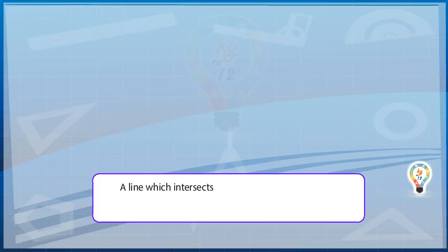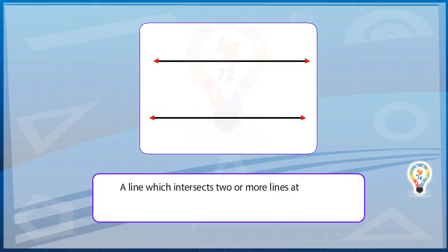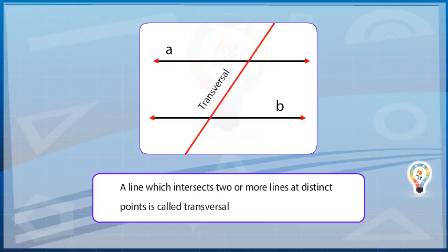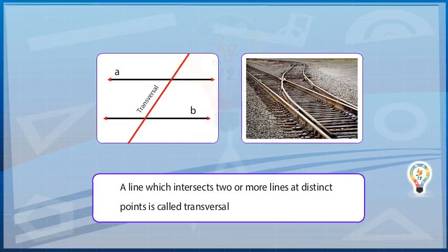A line which intersects two or more lines at distinct points is called a transversal. A railway line crossing several other lines is an example of a transversal.